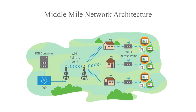Looking at the scenario of a tower some miles away from villages that need to be connected, we do it by harnessing TV white space in the middle mile. The middle mile network architecture has a fiber point of presence and a tower, through which we connect to the villages. The last mile is through Wi-Fi access points where villagers use computers, laptops, and mobile phones.